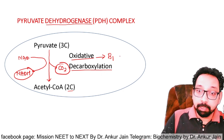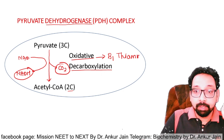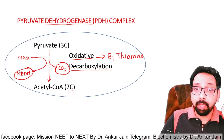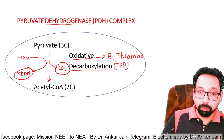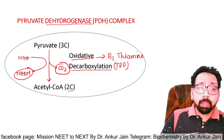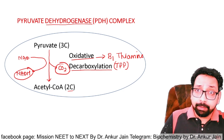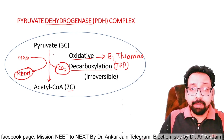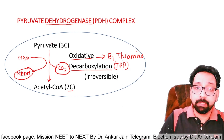The cofactor for oxidative decarboxylation is vitamin B1, that is thiamine — a frequently asked question in NEET pattern and FMG exams. The active form of B1 is thiamine pyrophosphate (TPP), also called thiamine diphosphate. This reaction is irreversible, taking place in the mitochondria, meaning acetyl coenzyme A cannot be converted back to pyruvate.